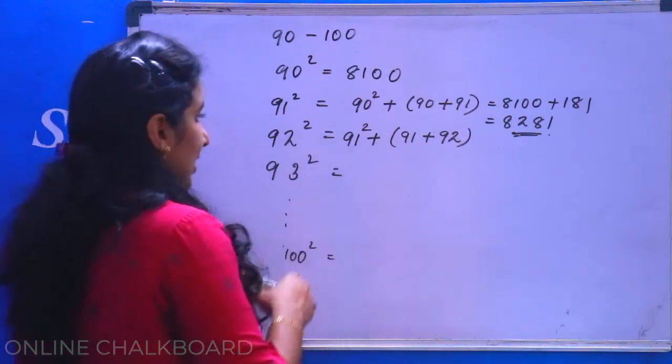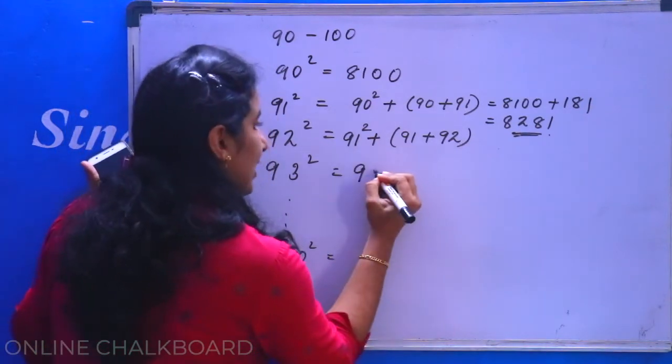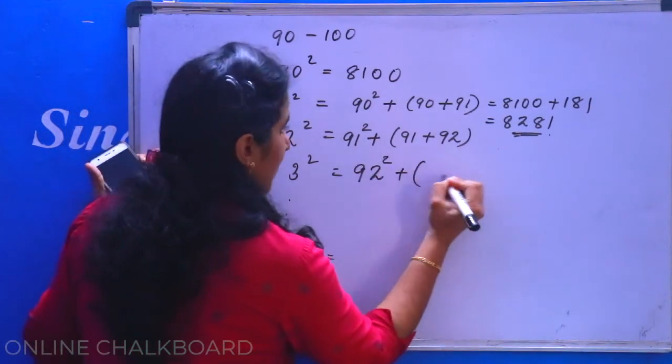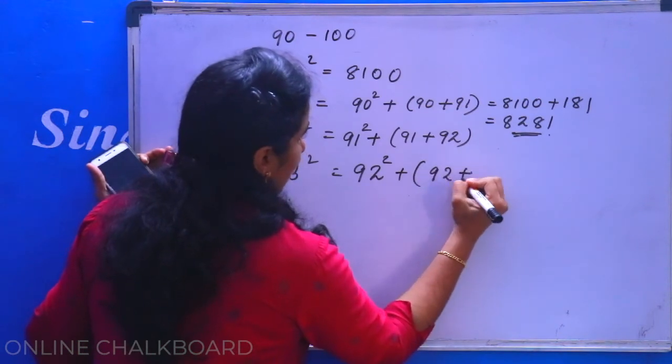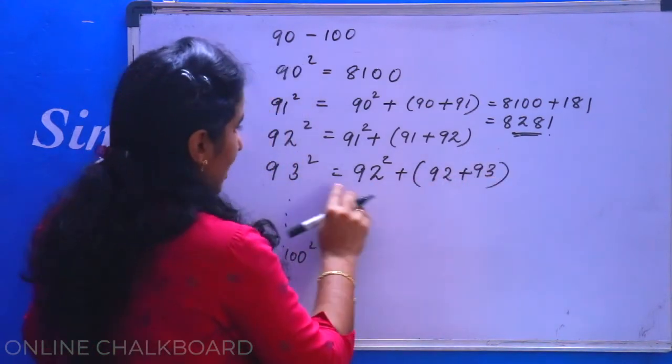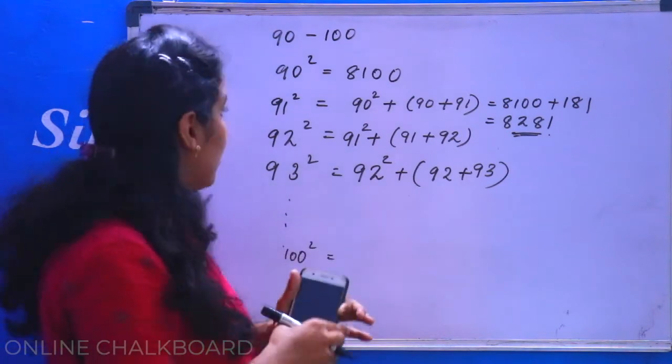Now let's call the 93 square. What we want is 93 square. 93 square plus 92 square. 92 square plus 93.